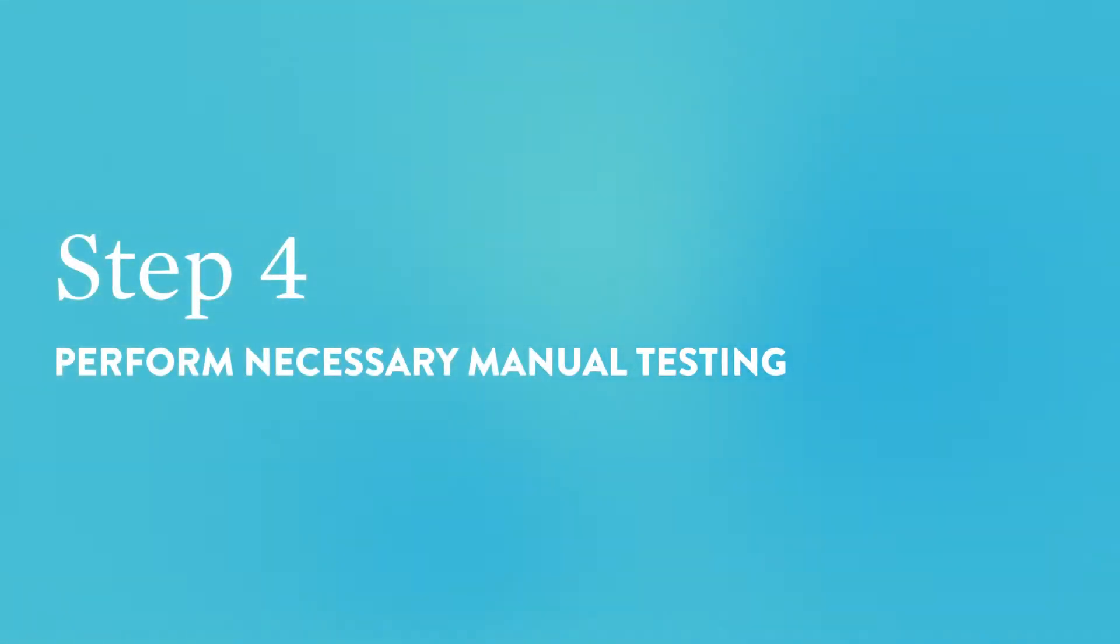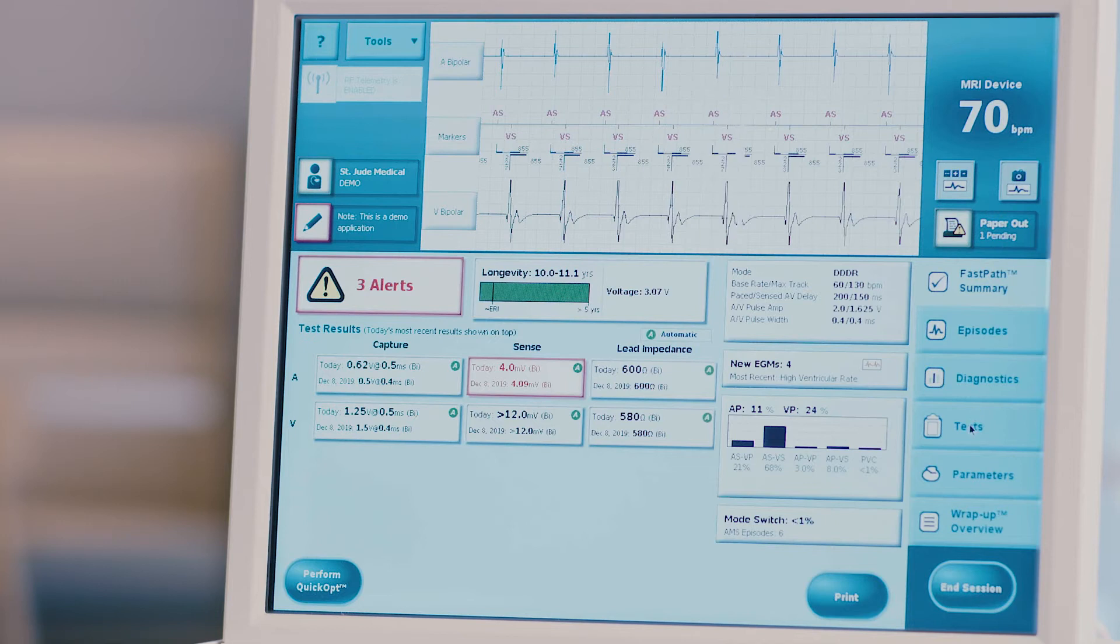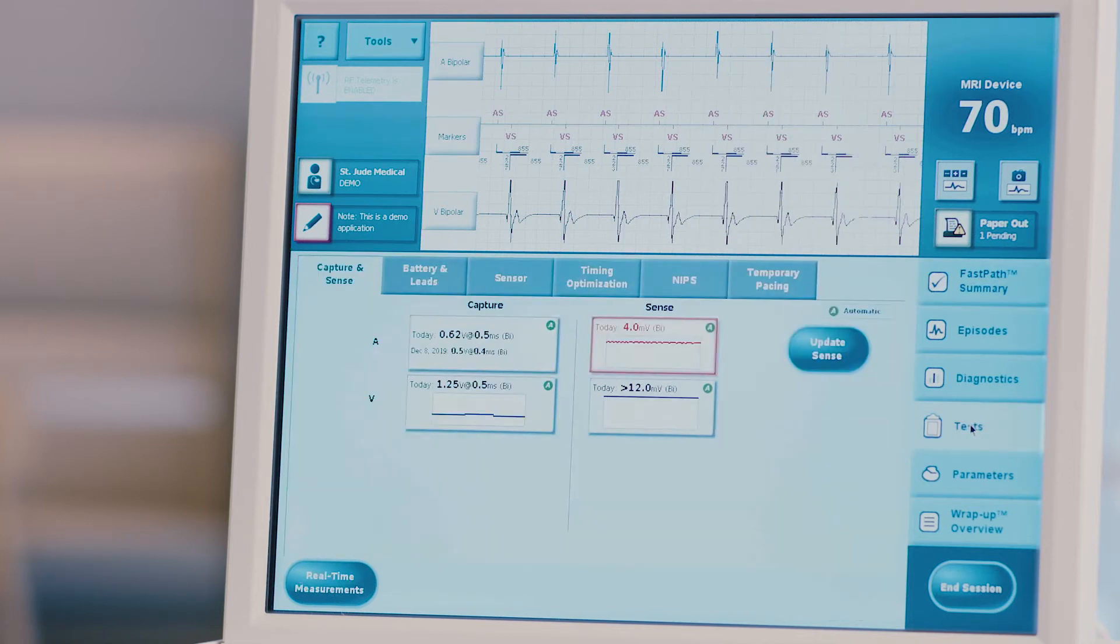Step 4: Perform necessary manual testing. Only do this in the presence of a healthcare provider or certified Abbott employee. Press the test tab on the right side of the screen. The capture and sense tab will open first.